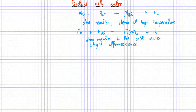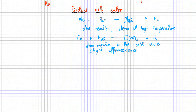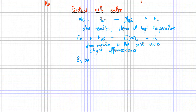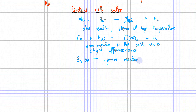Strontium, barium, and radium are further down the group. Radium is a radioactive element, so we won't discuss it. Strontium and barium have similar reactions with water, but these reactions are vigorous. Because reactivity increases down the group, their reactions become more vigorous, similar to group 1 metals.